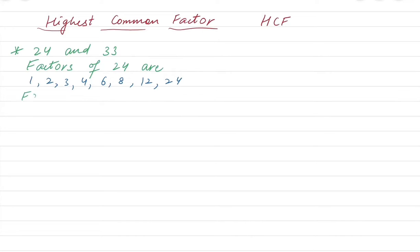And the factors of 33 are... For both the numbers you need to find the factors, and then you need to find the common number. So 1, 3, 11, 33.